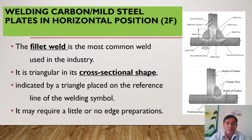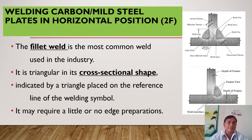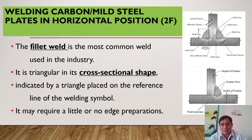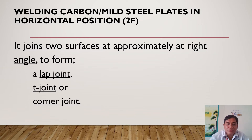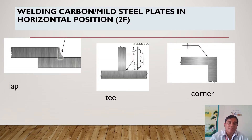Let's review the fillet weld. A fillet weld is a common weld used in industry and is triangular in its cross-sectional shape, as shown in the figure. It is indicated by a triangle placed on the reference line in the welding symbol, and it may require little or no joint preparation. It joins two surfaces approximately at right angles to form a lap joint, T-joint, or corner joint.